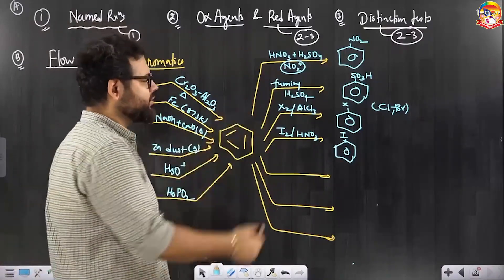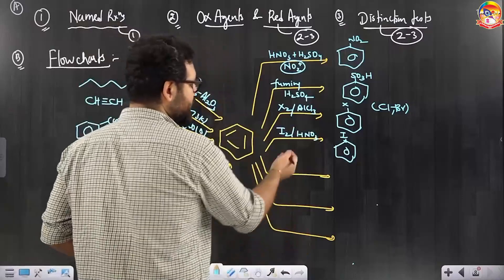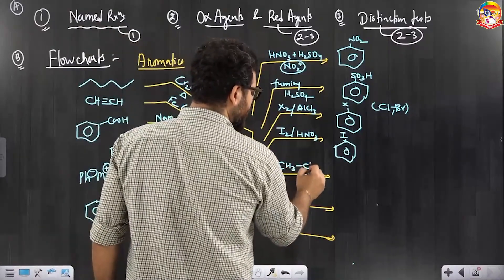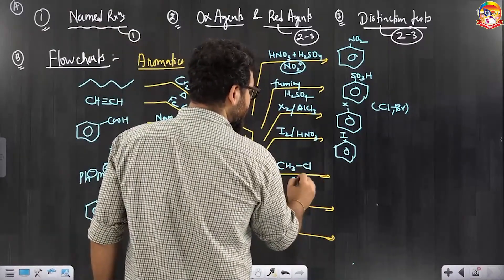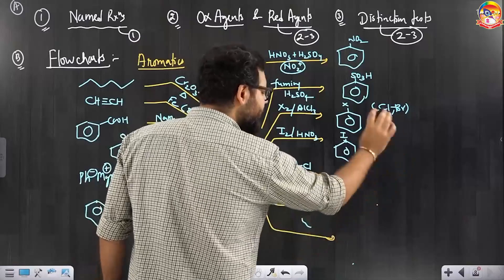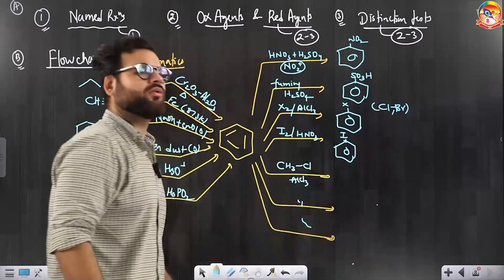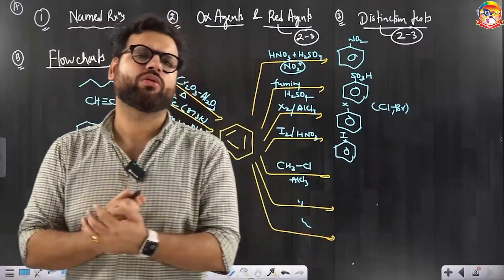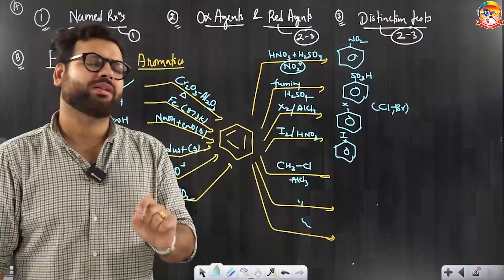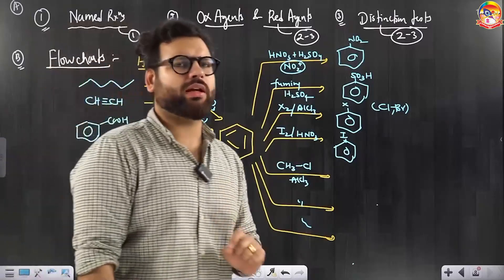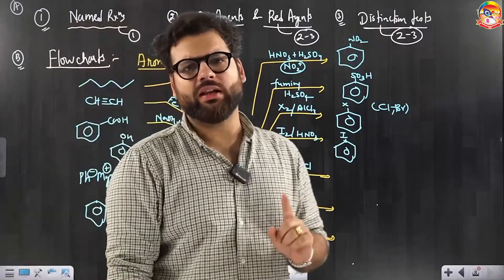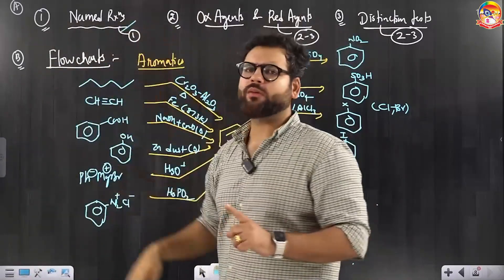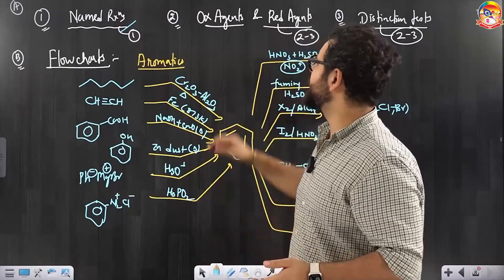Like this, so many things you can do — I have just written a few examples. You can do Friedel-Crafts alkylation, you can do Friedel-Crafts acylation. I have just given you a gist of how to draw a flowchart. So this is what about organic chemistry I can tell. Named reactions — keep them in one place, learn them, revise them.